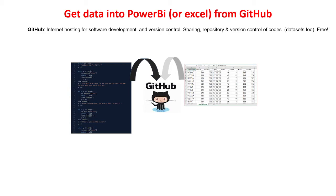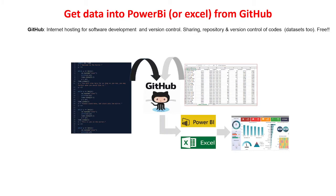This means GitHub can be a good place to find datasets. For example, I was recently working on a project where I wanted to do a map and needed the GPS coordinates of every country in the world. I went to GitHub, found a dataset, and brought it into Power BI and Excel to do my analysis. In this video, I'm going to teach you how to bring a dataset that has already been put in GitHub into Power BI.